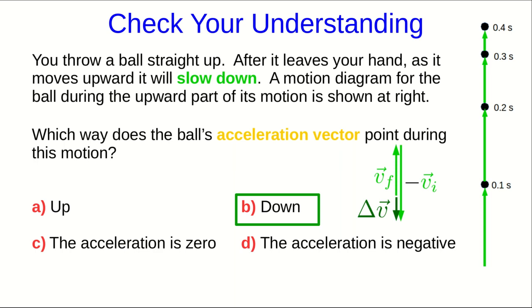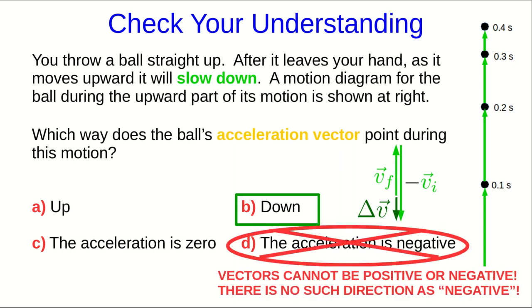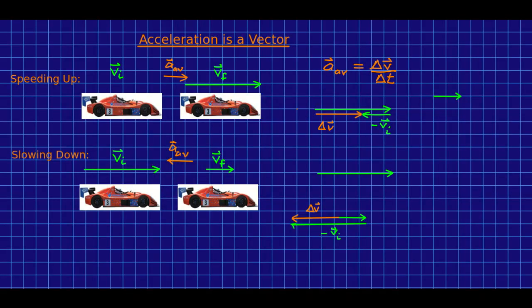As long as we're at it, I'll just quietly remind you of something that I might have mentioned before. Vectors cannot be positive or negative, and there's no such direction as negative. As I hope you're getting used to, the vectors, by which I really mean the arrows, do not depend on our coordinate system, and so I haven't defined coordinates. But if we wanted to talk about the components of these vectors, now we would have to define a coordinate system. So if we took a fairly typical coordinate system, like so,